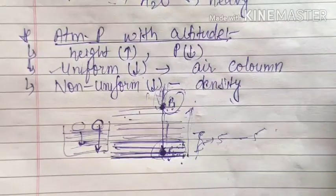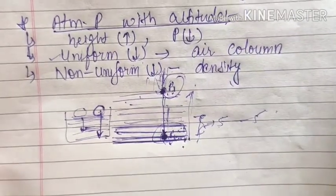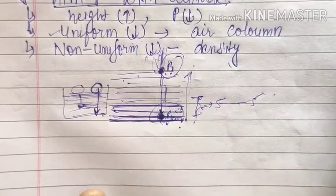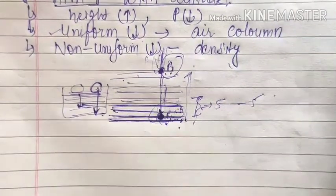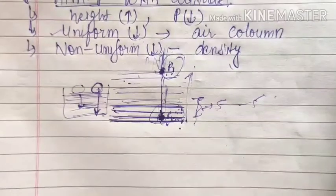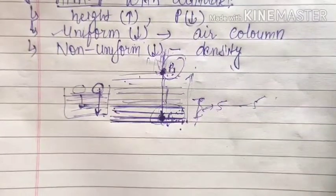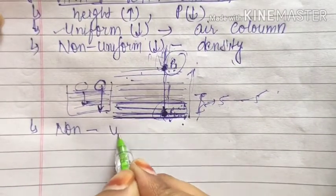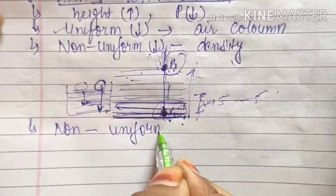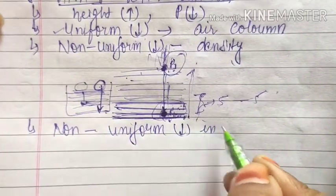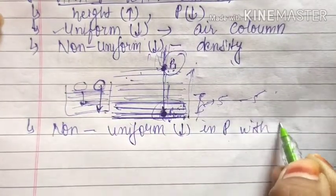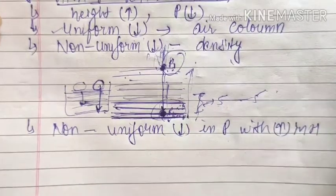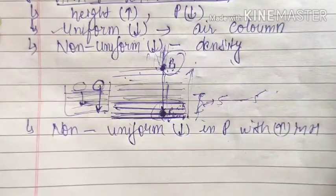Regarding the altimeter: if asked in a generalized way, the final conclusion is a non-uniform decrease in pressure with increase in height or altitude. This is what we have to remember, and it was asked in a previous exam.